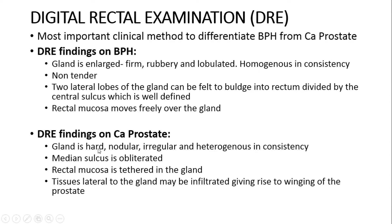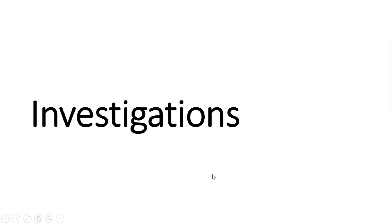In carcinoma prostate, the gland is hard, nodular, irregular, and heterogeneous in consistency. The median sulcus will be obliterated in carcinoma prostate. The rectal mucosa will be tethered to the gland and cannot move freely over it, unlike in BPH. The tissues lateral to the gland may be infiltrated, giving rise to the 'winging' of the prostate.